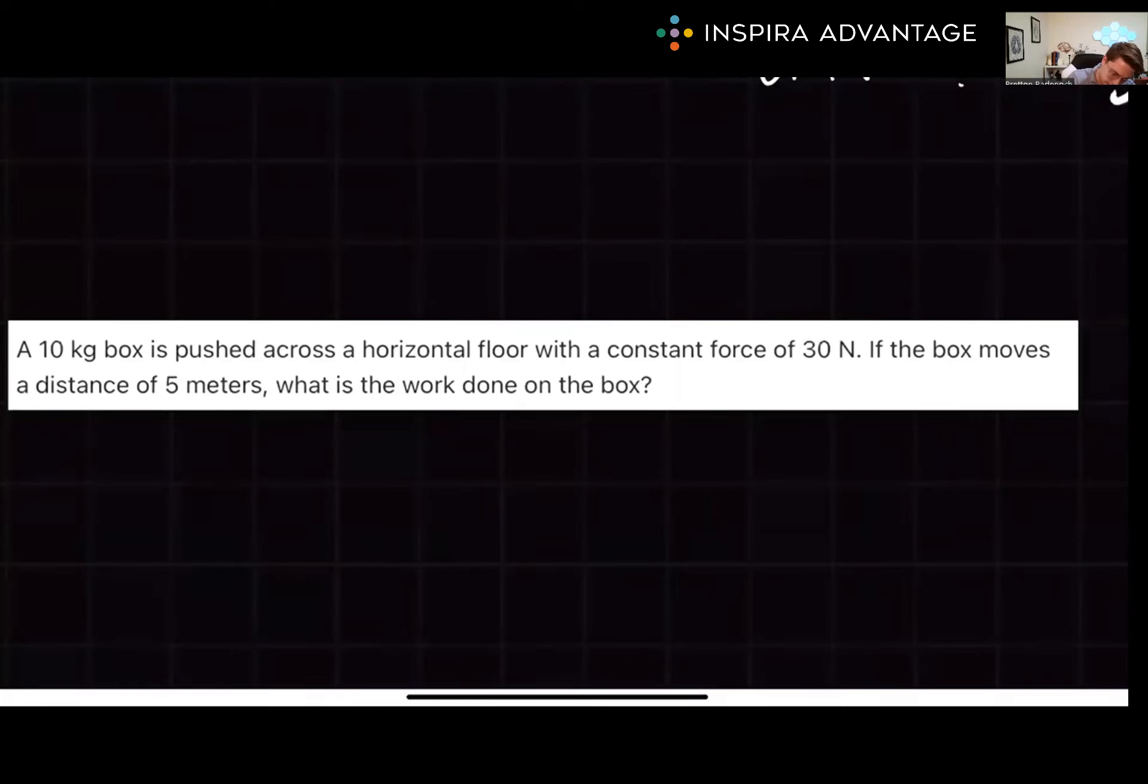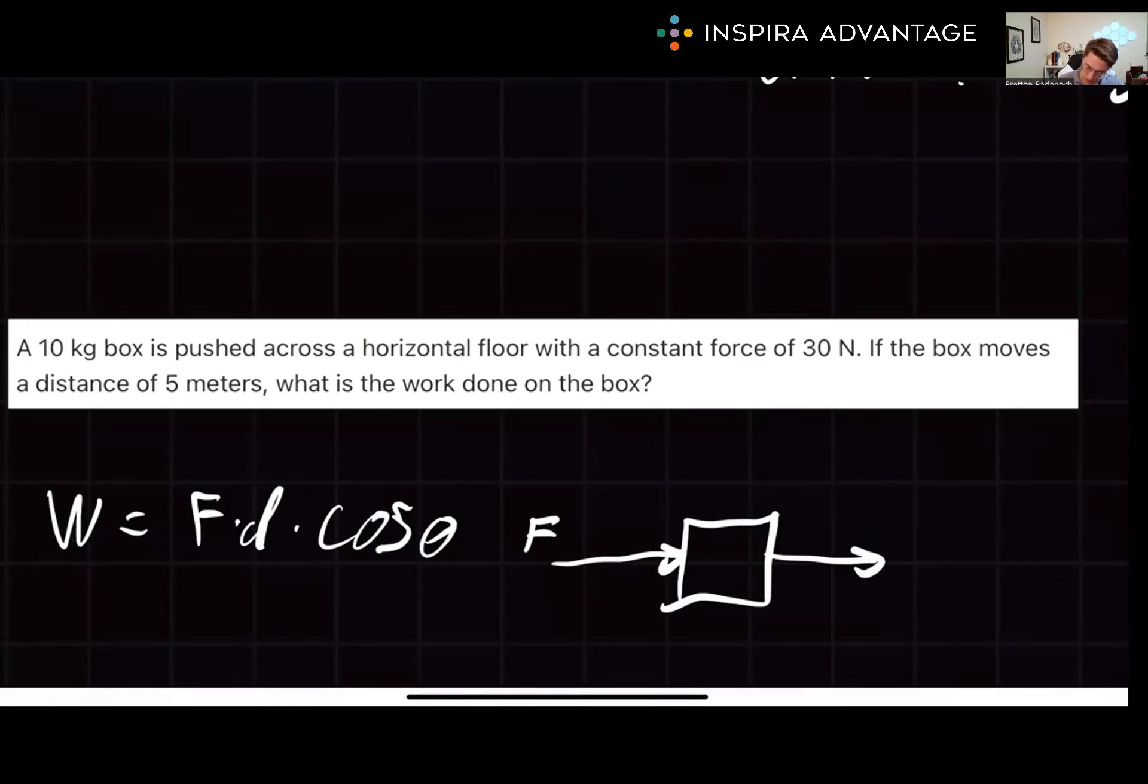Immediately, we want to think about what equation we should use. Since we're talking about work, we'll do work equals force times distance times cosine theta. Since we have a horizontal force and the box is moving horizontally, theta equals zero, and cosine of zero equals one. So we can ignore the cosine in our equation. It's just multiplying force times distance.